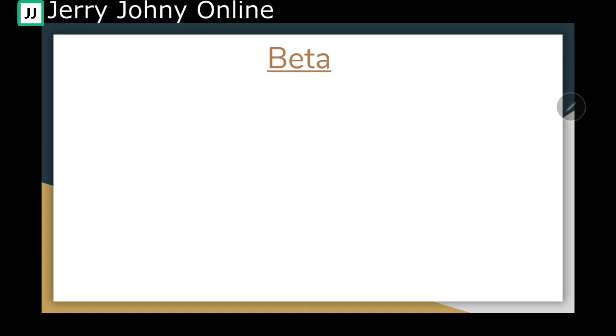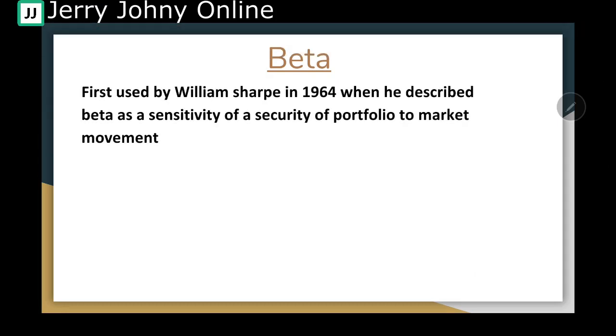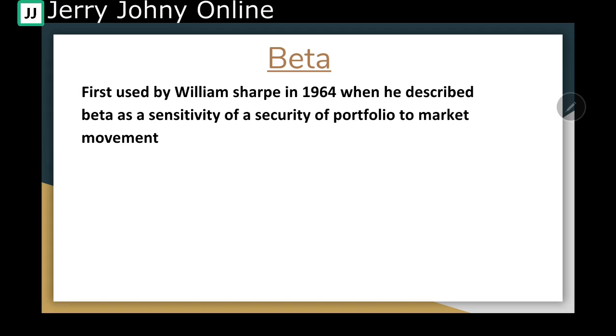This origination was put forward by William Sharpe in his work on CAPM, the capital asset pricing model. He described beta as a sensitivity of a security or a portfolio to market movement. You are comparing the market's movement to that of a security or portfolio.